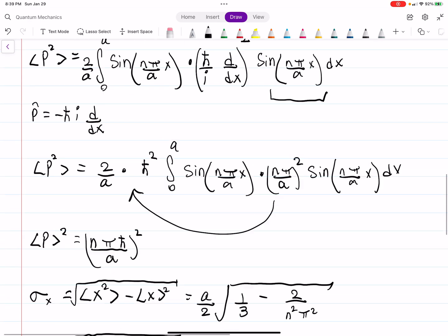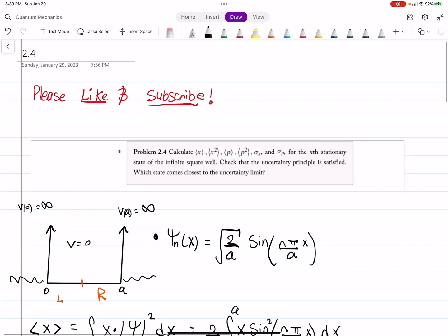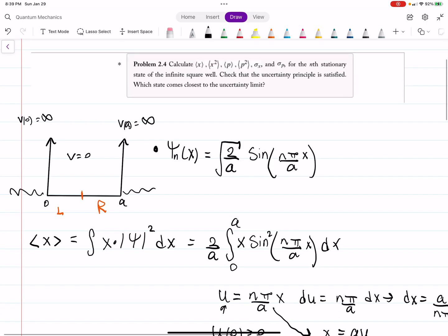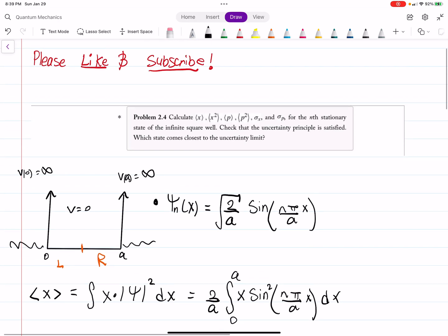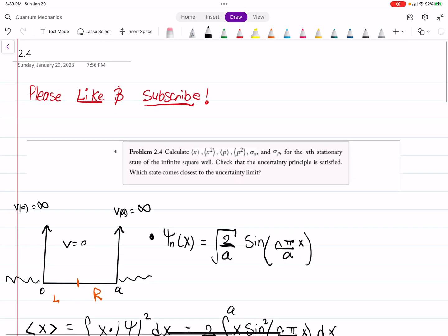So, that's how you do problem 2.4. Finding our important expectation values, our sigmas, talking about uncertainty. So, hopefully that helps. If it did, please like and subscribe. And I will post more soon.